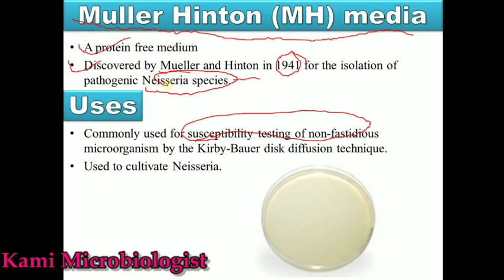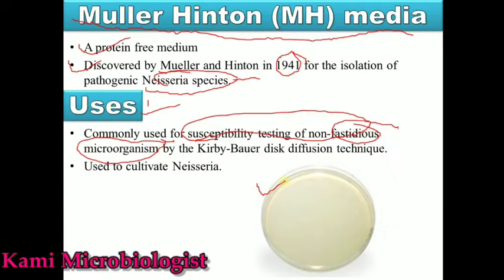Mueller Hinton media is used for antibiotic profiling — specifically to check the antibiotic profiling of non-fastidious microorganisms, meaning non-fastidious bacteria. Non-fastidious bacteria are bacteria which do not need special types of nutrients for their growth; we can easily grow this type of bacteria on any type of media. Examples include E. coli and Klebsiella. So using this media you can grow every type of bacteria, whether gram-positive or gram-negative.